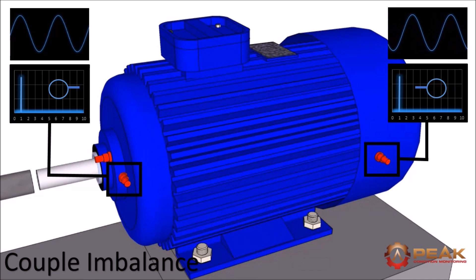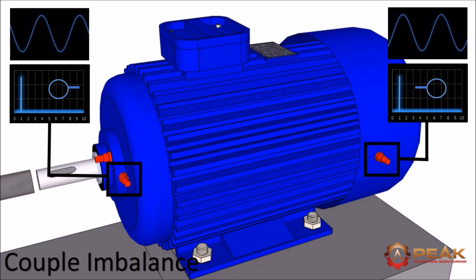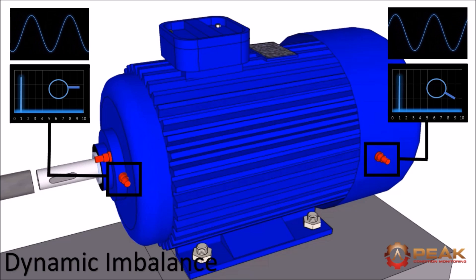A couple imbalance would show the two waveforms to be 180 degrees out as shown here. Finally a dynamic imbalance would show the vibration to be out by any other angle, neither completely in or out of phase.